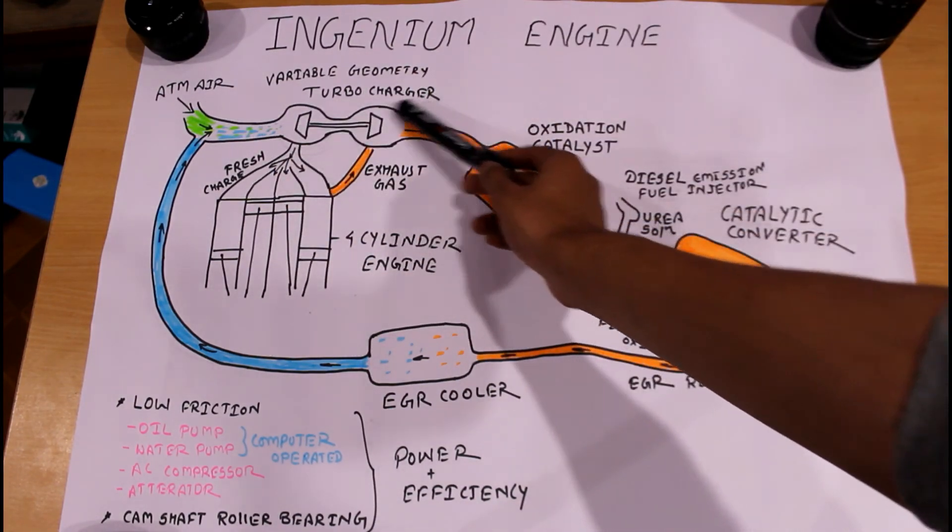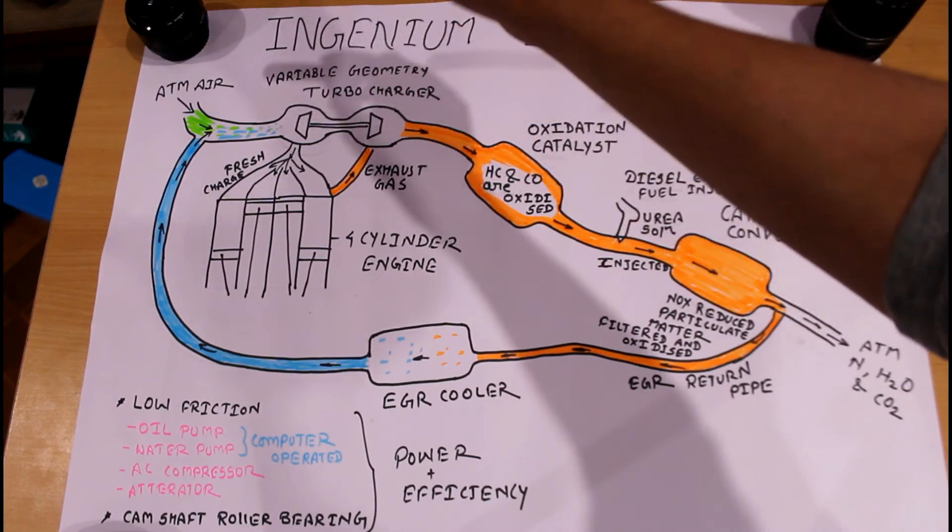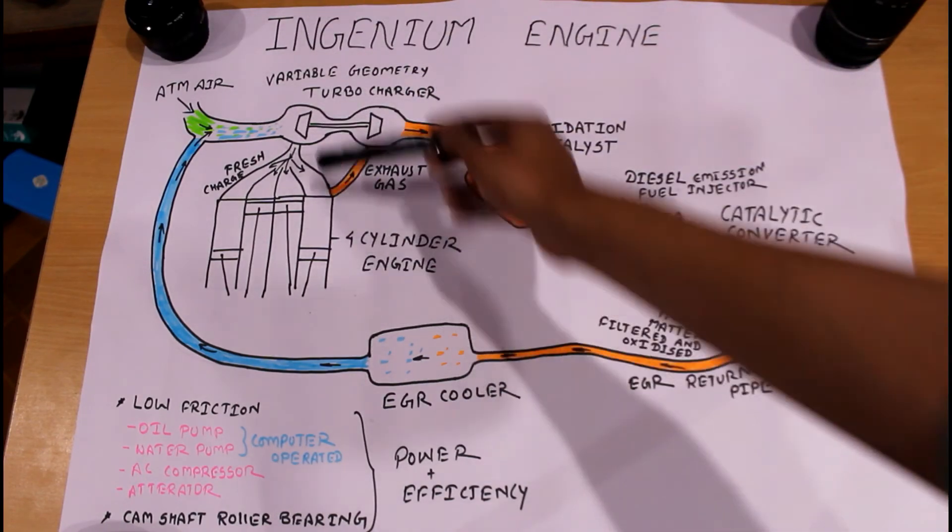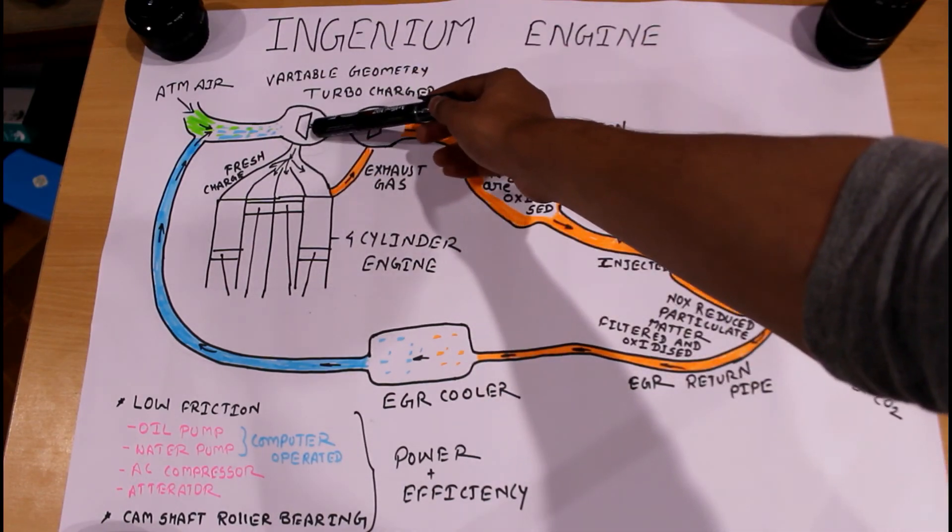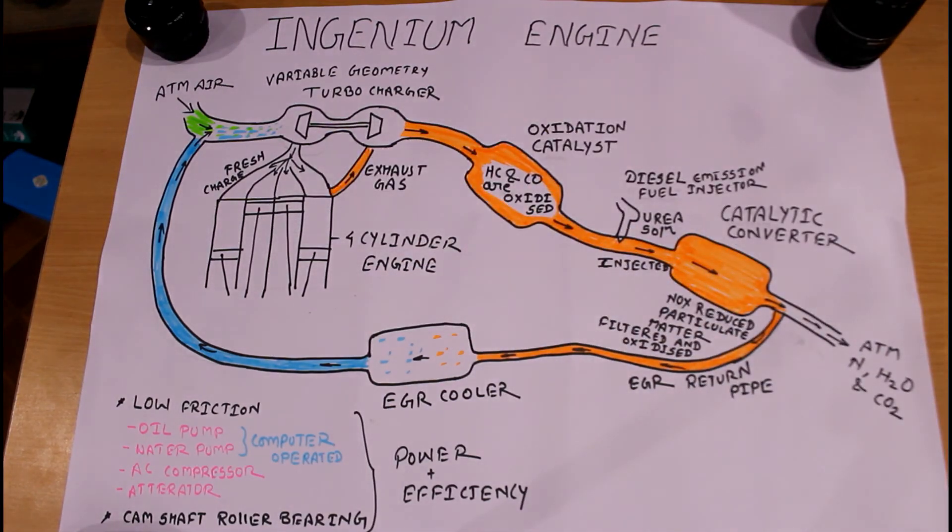Now the fresh charge enters through the variable geometry turbocharger compressor. After compressing, the fresh charge goes inside the engine cylinder and the process is complete.